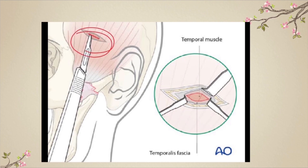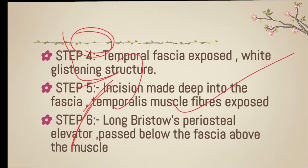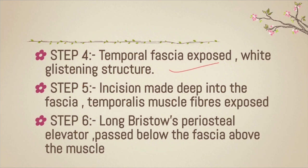To draw this, mark the external ear, the zygomatic bone and arch, and its extension to the mandible — that is where you place the incision. Step four: the temporal fascia is exposed; it is white in color. Step five: an incision is made into the fascia so you can see the temporalis muscle. Step six: the long Bristowe periosteal elevator is passed below the fascia and above the muscle.